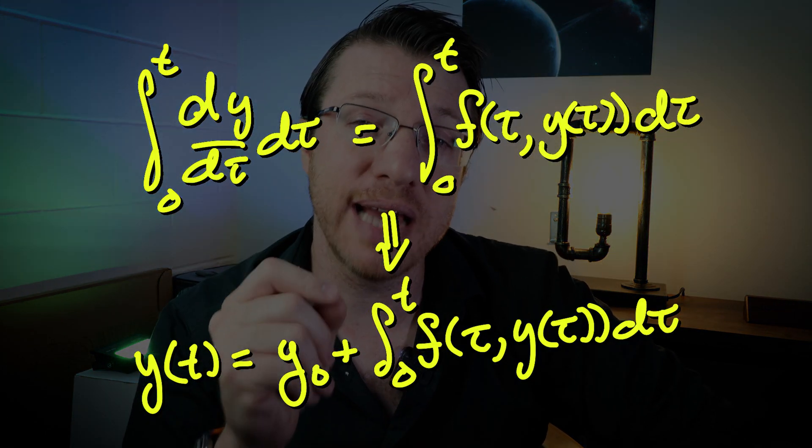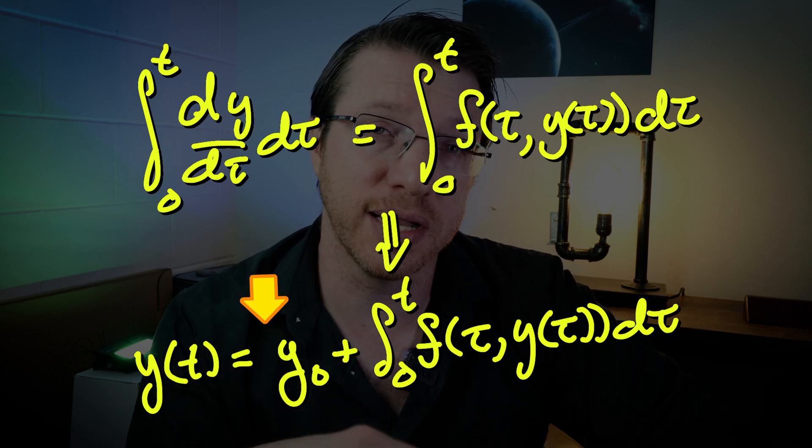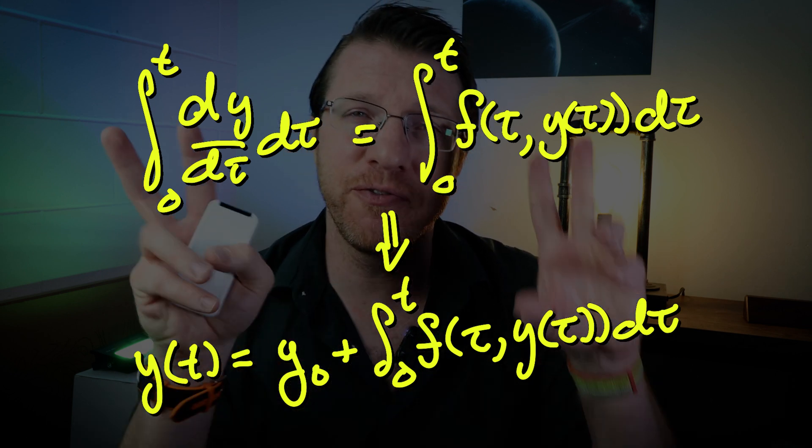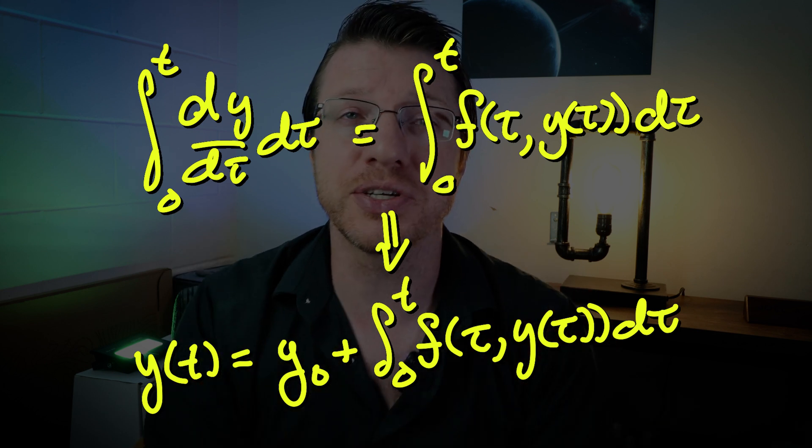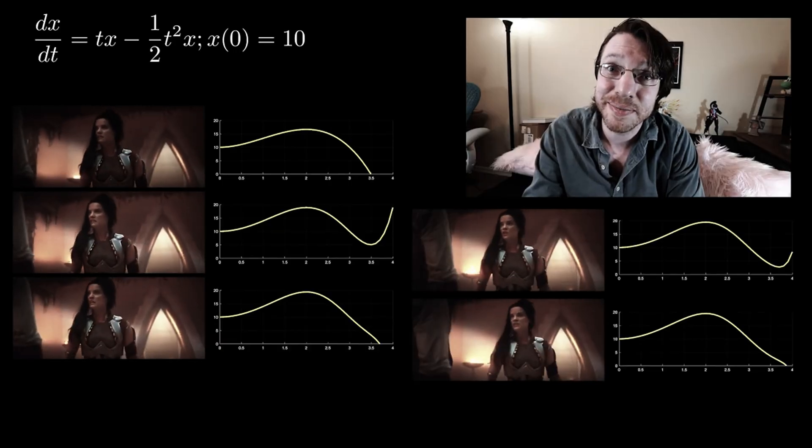We see that if we have a solution and we put it in the right-hand side, it should appear on the left. That would mean that this is a fixed point of this operation. And Picard's theorem is one of the early examples of an application of the Banach fixed point theorem, which we talked about in a previous video.